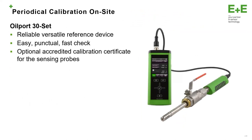It is always recommended to perform a periodical on-site calibration for all the moisture in oil sensors. The user, just using the oil port, sets the handheld device and can check the quality of the sensor using the handheld device.